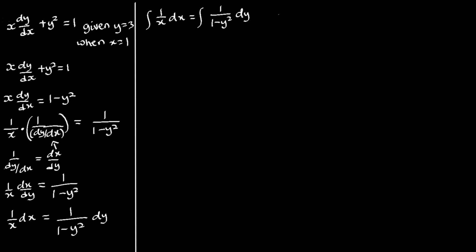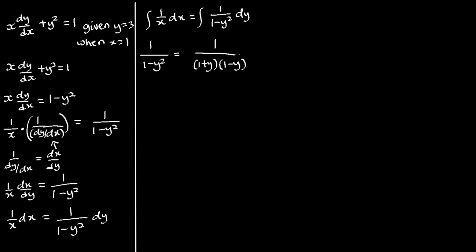For us to apply partial fractions, we have to write the fraction 1 over (1 minus y squared) in a different form by splitting it into two parts. We factor the denominator using difference of two squares: 1 over (1 + y)(1 − y). We then apply this to get the two parts of the partial fraction.